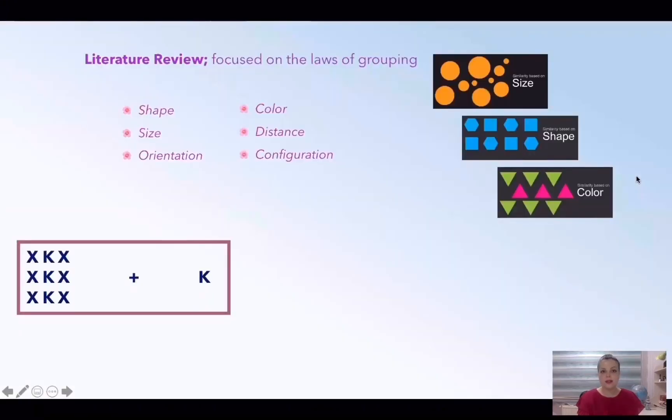Former studies have shown that the strength of crowding depends on the laws of grouping. As the similarity between target and flankers increase, the strength of crowding increases too. For example, here there is a similarity in grouping between targets and flankers in terms of shape, size, color, and orientation. However, here these principles are violated and it facilitates detection of the target.